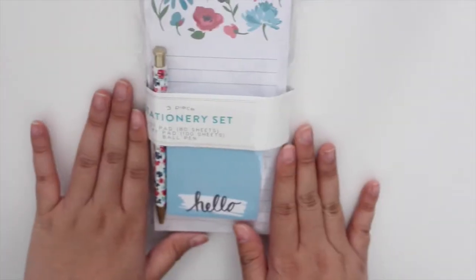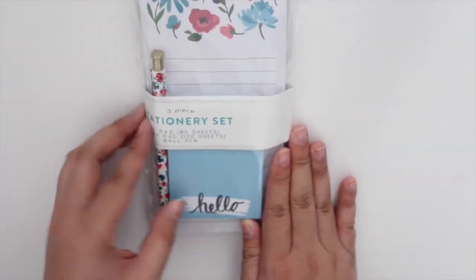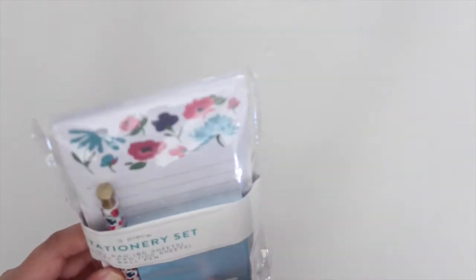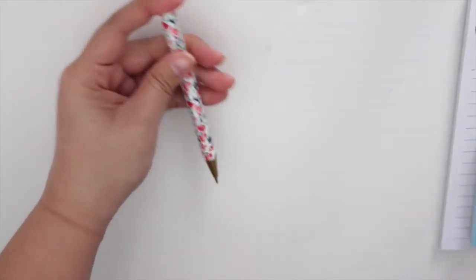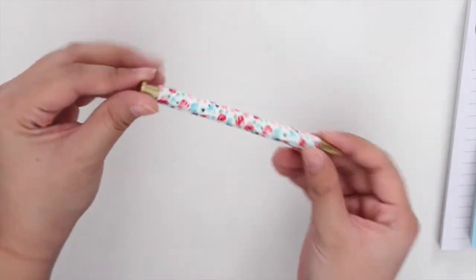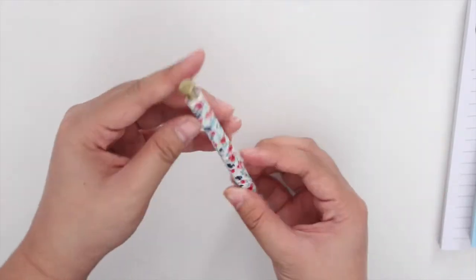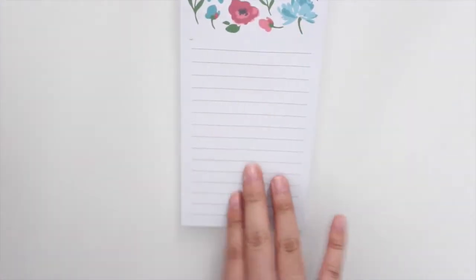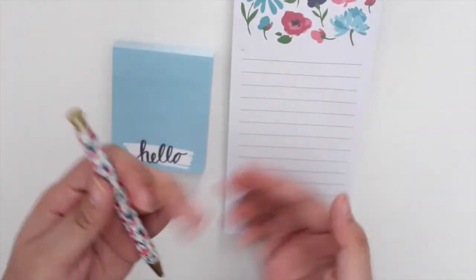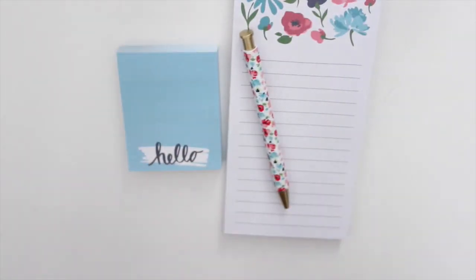I also got this three-piece stationery set and it has a sticky pad, a list pad, and a ballpoint pen. Here's the little pen. I love this - I mainly got it for the looks and for my Instagram pictures because it's really pretty. Then we have the sticky pad that says hello and this list pad that has a magnet on the back. There was one that was in pink but I decided not to get it just because I didn't need it and I was like just pick one.